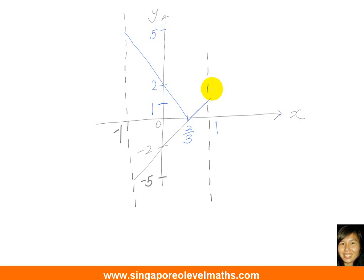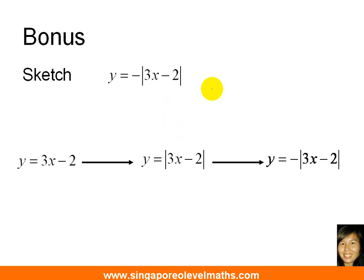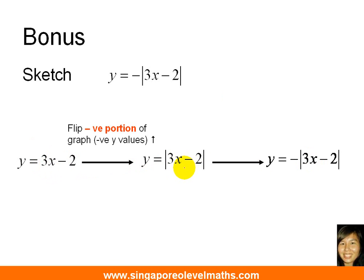I hope you have found the steps and the step-by-step approach useful to help you understand better. As usual, I would like to end this video with a bonus question for you. What happens if the question asks to sketch y equals to negative modulus of (3x minus 2)? We start with the graph without the modulus sign, then flip the negative portion upwards to get the modulus graph. The question is: how do we get from a modulus graph to a negative modulus graph? That is the question for you to think about — you can leave your answer in the comment section. I look forward to hearing from you.